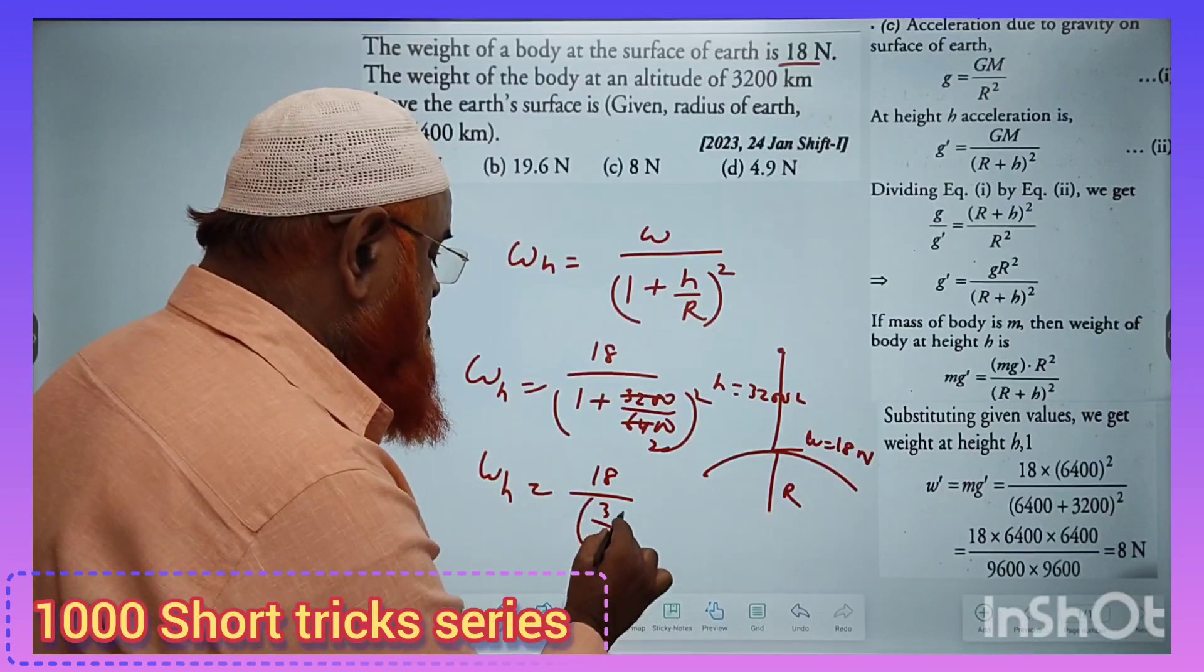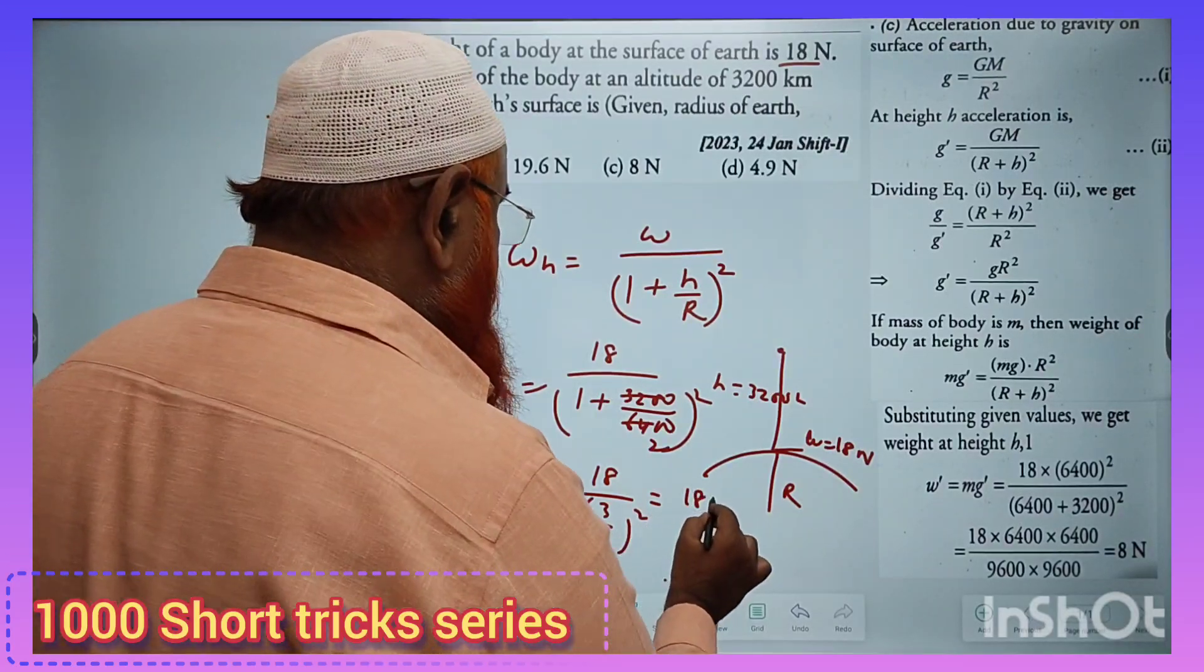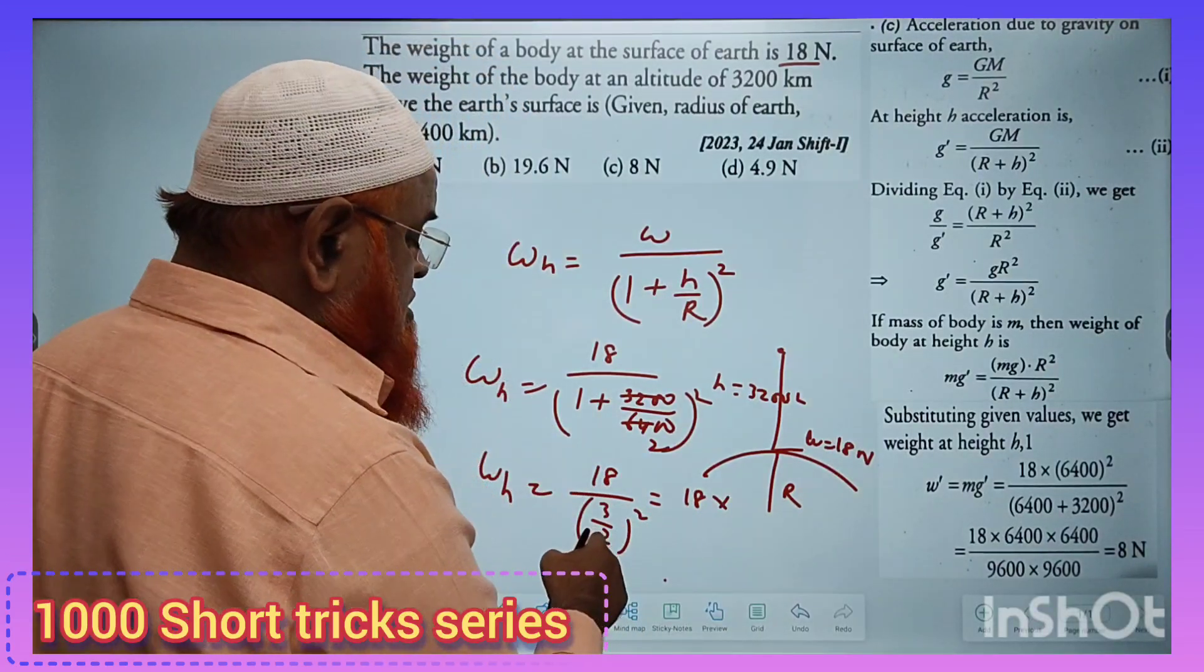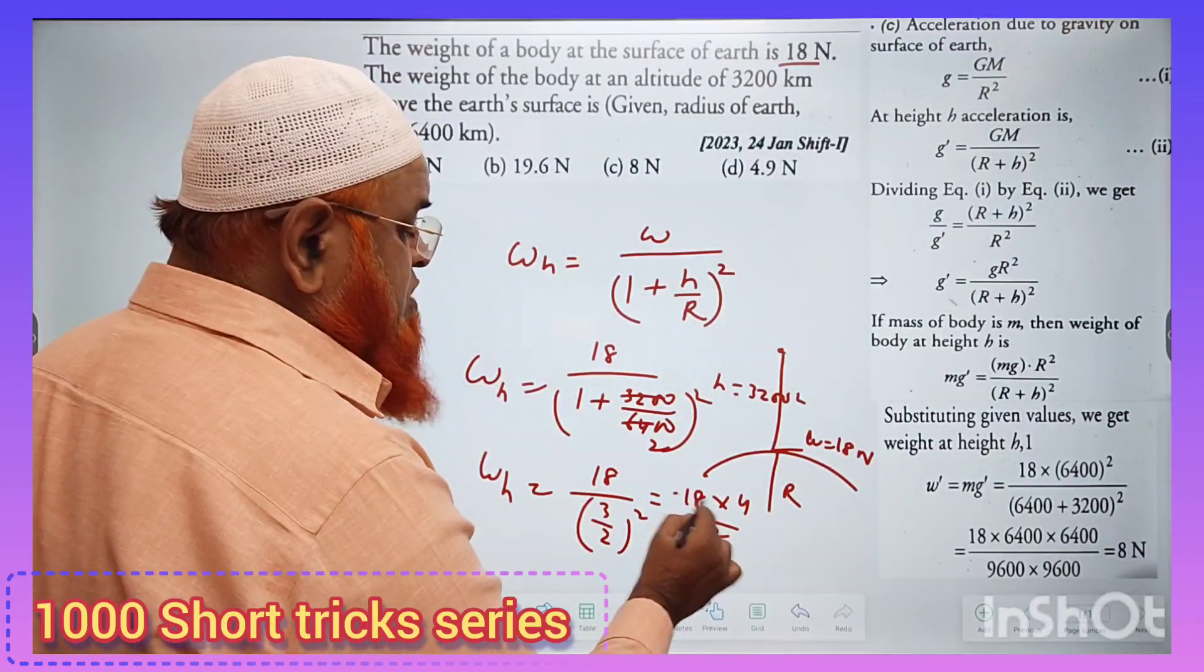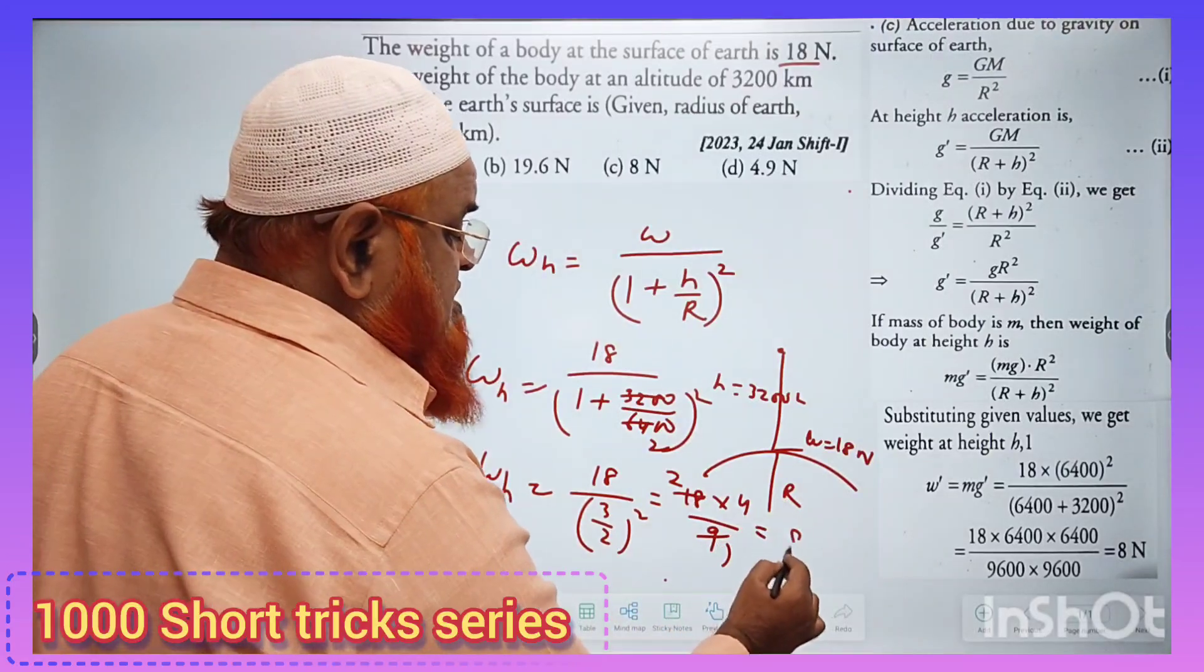So 18 into 2, the 4 comes to numerator, 3 squared equals 9 goes to denominator. 9 into 1 is 9, 9 into 2 is 18. 2 times 4 is 8 newtons.